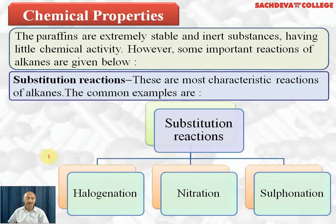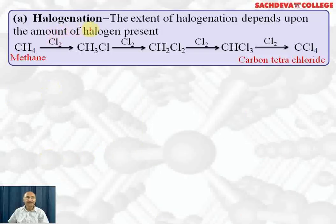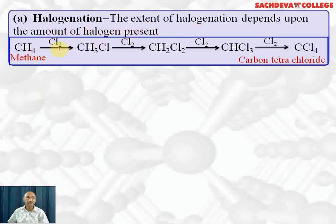Halogenation: the extent of halogenation depends upon the amount of halogen used. If we take methane and use one mole of chlorine, we get chloromethane. Chloromethane reacts with another mole of chlorine to form dichloromethane — all these reactions take place in the presence of sunlight. Dichloromethane reacts with chlorine to form chloroform (trichloromethane), and chloroform reacts with chlorine in presence of sunlight to finally give carbon tetrachloride.